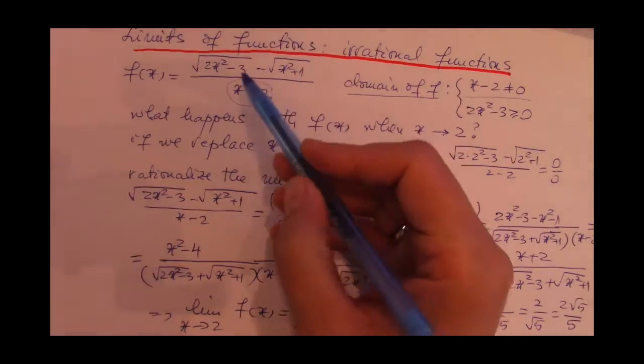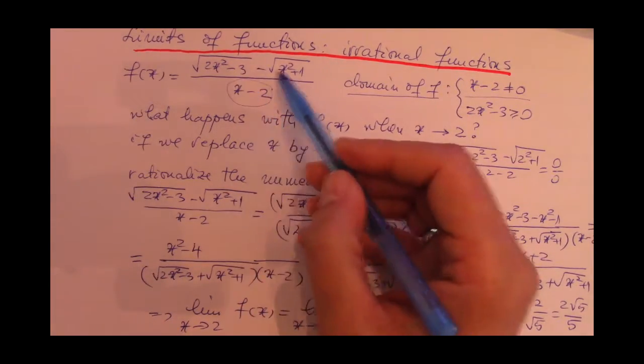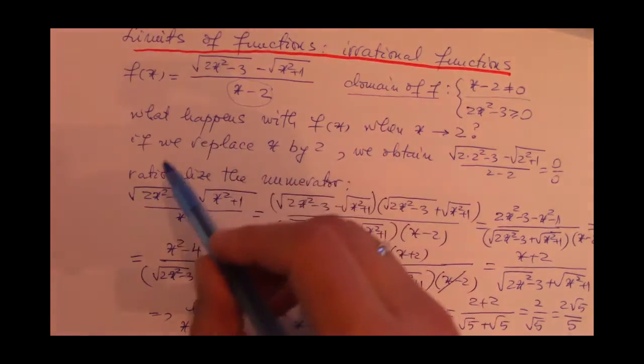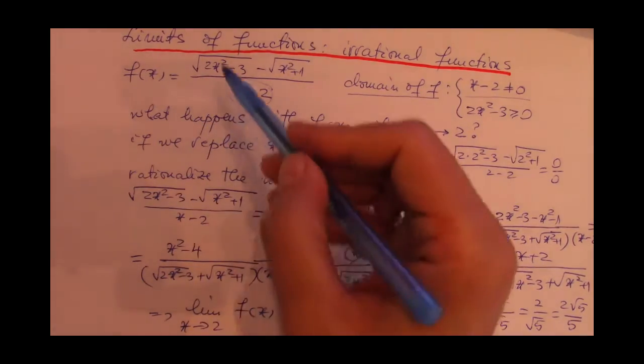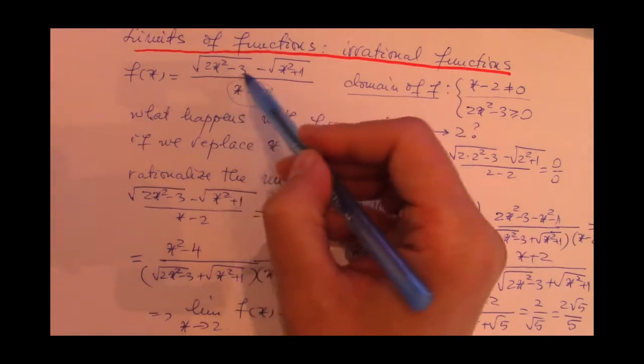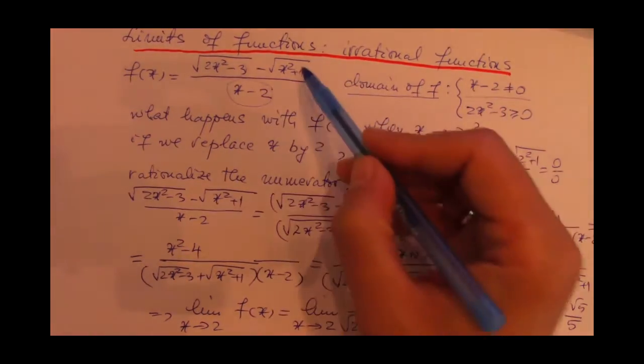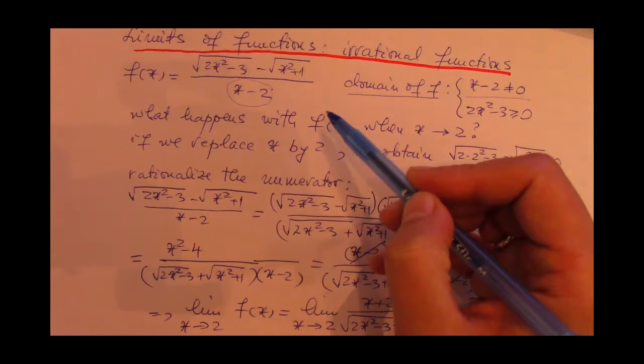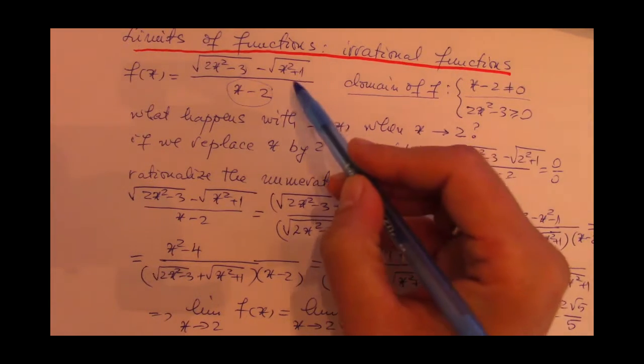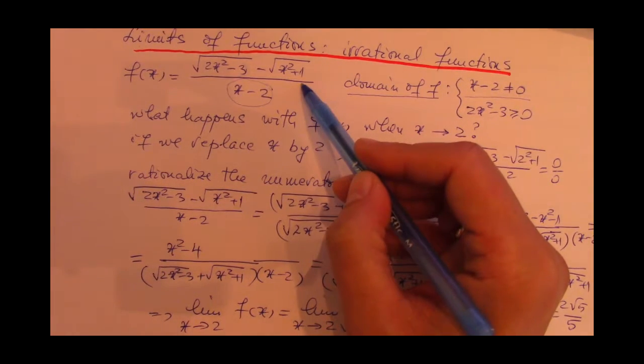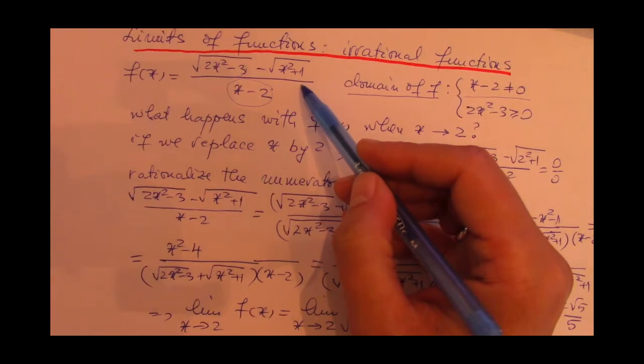We also notice a couple of square roots as part of the numerator, so the expressions underneath the square roots, which are 2x squared minus 3 and x squared plus 1, have to be greater than or equal to 0. Now x squared plus 1, there's no problem with it, it's always a positive number, but 2x squared minus 3 has to be greater than or equal to 0.